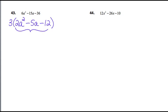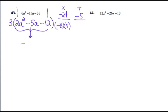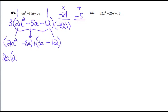The AC method tells me to find two numbers whose product is negative 24 — that's the 2 and the negative 12 multiplied — and whose sum is the negative 5 in the middle. That's going to be negative 8 and positive 3: they multiply to be negative 24 and add to be negative 5. So this 5a gets replaced with negative 8a and positive 3a. Then I bring down the minus 12 and the 2a squared. I group the first two and the last two and take out the greatest common factor from each group — in the first group, that's 2a, giving me (a − 4).